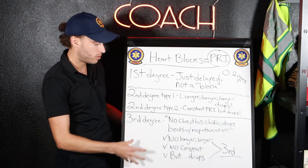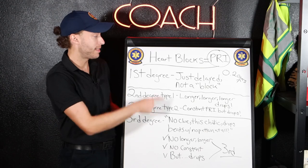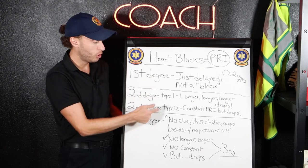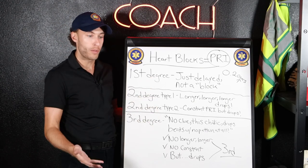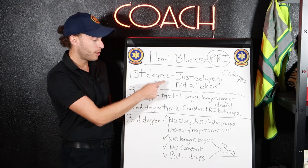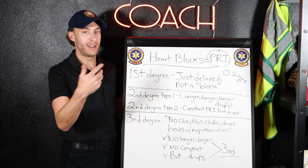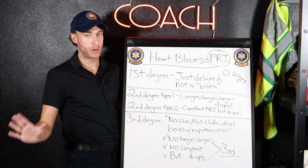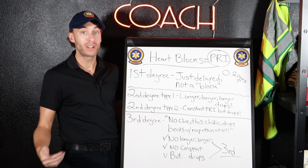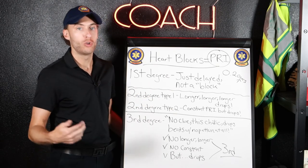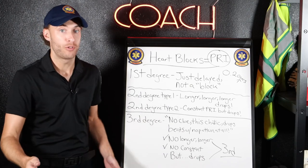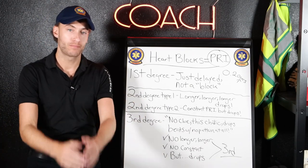The third degree is the worst one. First degree is a variant of old age — nine out of ten times benign, nothing to worry about. The second degree types are somewhere in the middle and need to be treated. With all of these, consider doing a 12-lead EKG. If they're symptomatic, they're getting one either way.